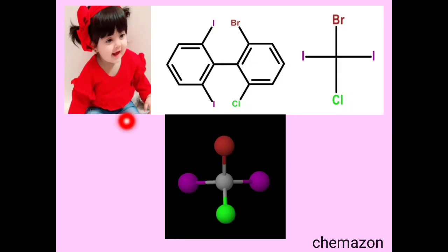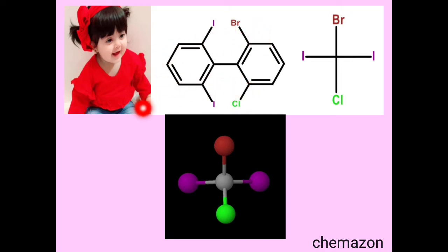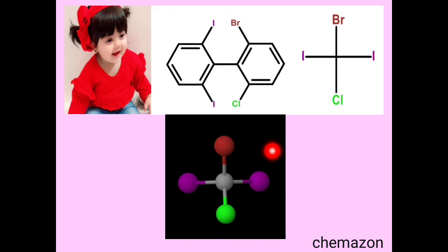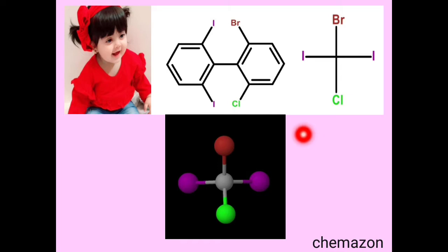Let us understand the third point with an example. If you look at this molecule from this perspective, imagine this iodine as your right hand, this iodine as your left hand, this bromine atom in front of your head, and chlorine in front of your legs. It would look similar to a Fischer projection formula. In the ball-and-stick model you can see that a plane of symmetry can pass through this molecule from the middle. Whenever a plane of symmetry passes through a molecule it becomes achiral. That is why the two ortho positions on one phenyl ring should not have the same groups.